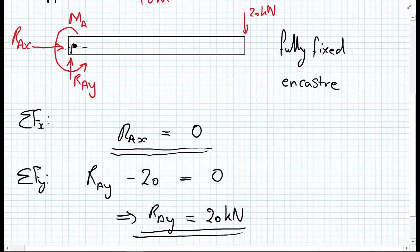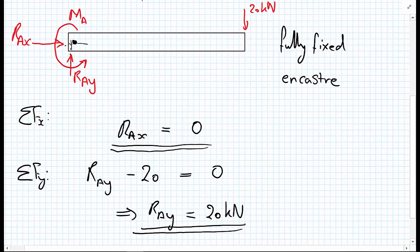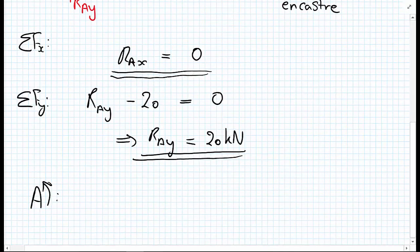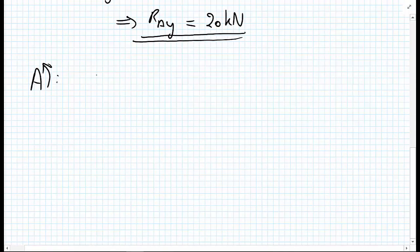And the 20 kilonewtons when taking moments about point A is trying to go clockwise, so it's a negative moment. So I can write my equation M_A, and that has no other components, it's just a moment.